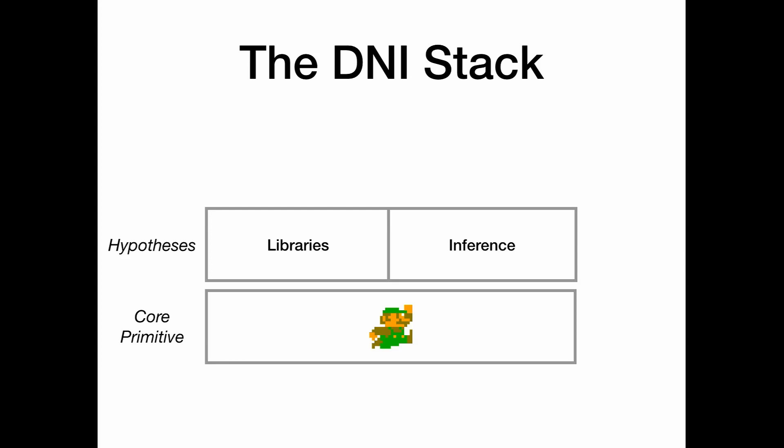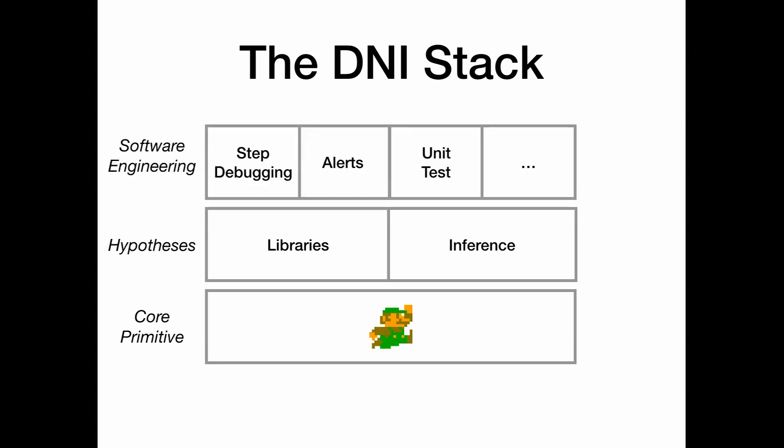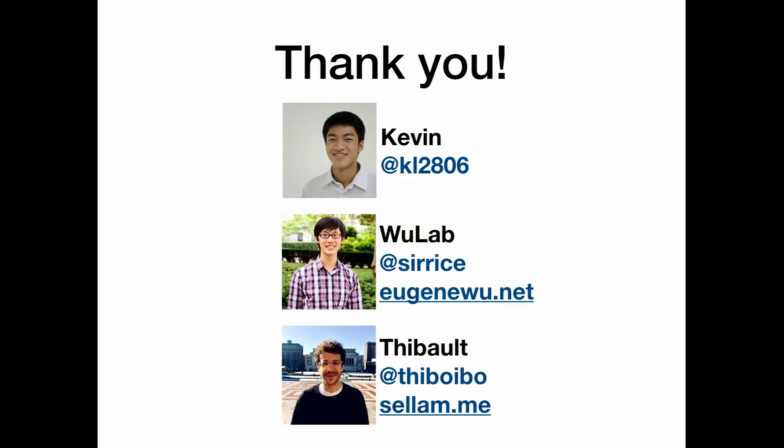So obviously we're really excited about this work and we believe that we can build a whole stack on top of Luigi. Luigi sits at the bottom. It's the primitive. It's the plumber. The input of Luigi is hypothesis functions. So the obvious next step in our research is going to be to understand how to generate those hypothesis functions and where they come from. Once we have this, then we will have the basics to provide a whole software engineering tooling to help people understand models. Thank you very much for listening to me. If you have questions, you can come to me or Kevin who sits there. This is a bit of advertisement for the WuLab. Thanks a lot.